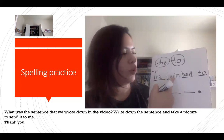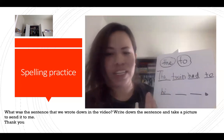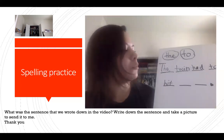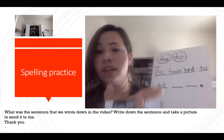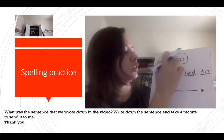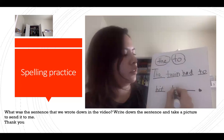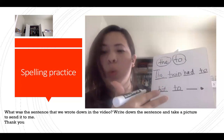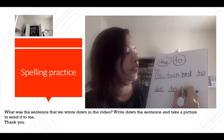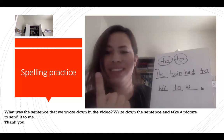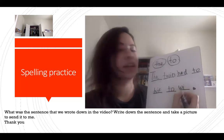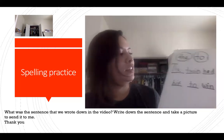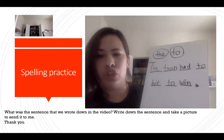Hit — like twin, same short I vowel sound. H-I-T. The twin had to hit to — same word, T-O. Win — W-I-N. What letter is that? You got a W! Then I-I-N. Win. N. The twin had to hit to win.